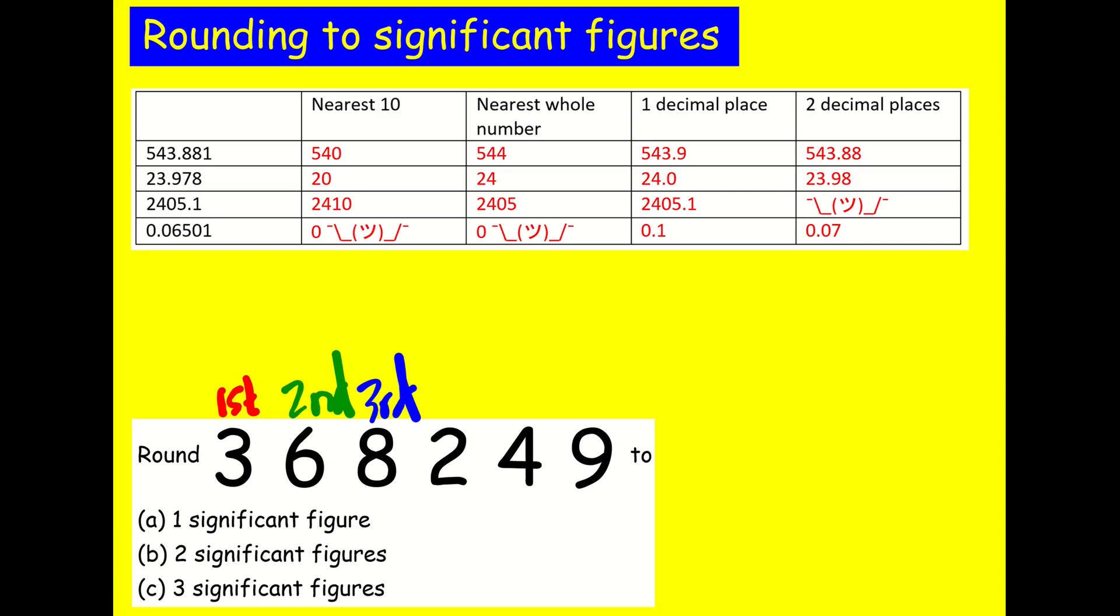If I then want to round to one significant figure, all I do is exactly what I did for the nearest ten and one decimal place. I look at the first significant figure, I look at the number after it, and I decide, do I round it up or keep it the same? In this case, I'm going to round up because it's a six, so it's going to become four. But I still need to indicate place value, so I'm going to put my zeros where they used to be. It's going to become 400,000. So that is me rounding this number to one significant figure.